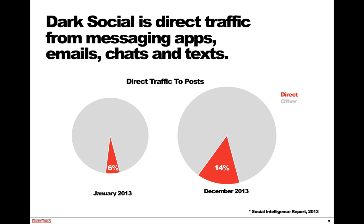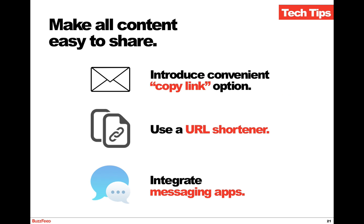As publishers and brands, how do we take full advantage of dark social? Make sure all content is easy to share. Introduce a convenient copy link option. Use a URL shortener. And try integrating messaging apps. Because people are likely copying the link, making it as easy as possible to grab it with one click or one tap will increase your chances of them sharing your content. For people sending text messages or tweets limited by character space, a compact URL through a shortening service also helps. Just a few months ago, BuzzFeed included a WhatsApp button on our mobile web experience. While we don't have detailed referral information, in the time it was there it got more clicks than the Twitter button — and WhatsApp usage has doubled in the last two months.